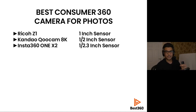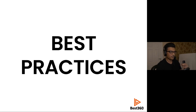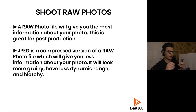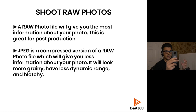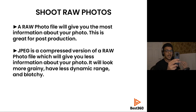In second place I'd give it to the Qcam 8K because it has a half-inch sensor, and probably third place to the One X2, which has a smaller sensor. Regarding best practices: 360 cameras can shoot two types of photo — a RAW photo and a JPEG photo. A RAW photo gives you the most information. A JPEG is a compressed version with a smaller file size and less information. If you want the most dynamic range, the most colors and clarity, you need to shoot with RAW.